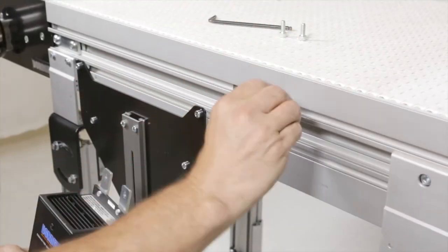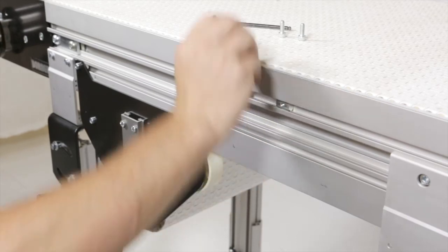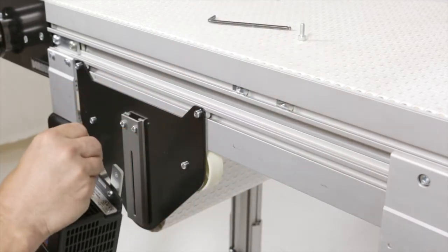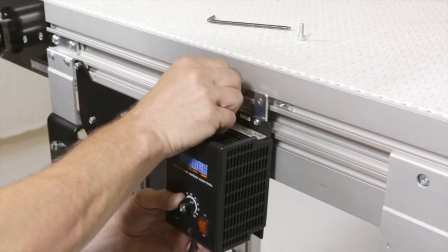To mount the controller, install the T-bars into the T-slot of the conveyor and attach the controller with two socket-head screws.